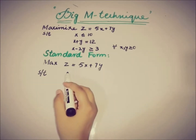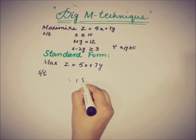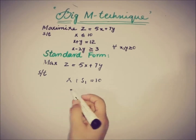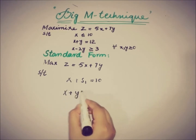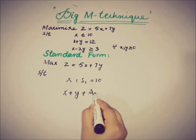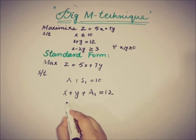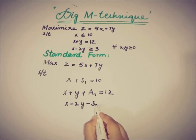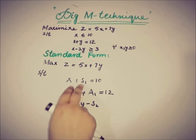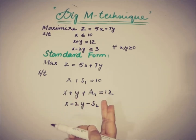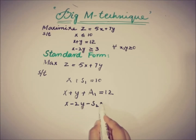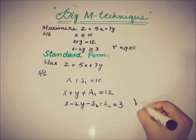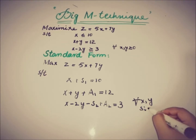For the first constraint, x less than or equal to 10, we only add the slack variable s1, giving x plus s1 equals 10. For the second constraint, x plus y equals 12, we add an artificial variable A1, giving x plus y plus A1 equals 12. For the third constraint, x minus 2y greater than or equal to 10, we subtract the surplus variable s2 and add artificial variable A2, giving x minus 2y minus s2 plus A2 equals 10. All x, y, and si variables are greater than or equal to 0.